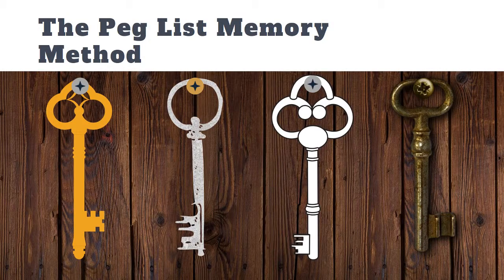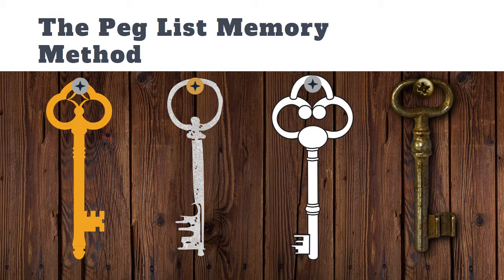One of the systems I'll be teaching you is called the Peg List Memory Method. Basically, what we'll be doing is taking a list of items that we are familiar with the order of, and then linking that to the things that we want to remember.